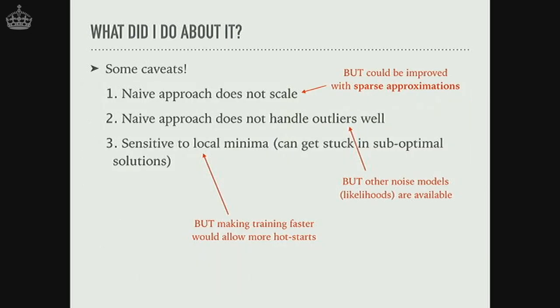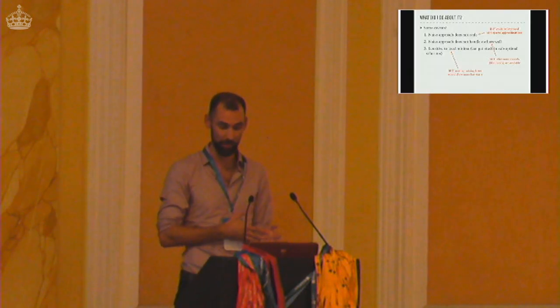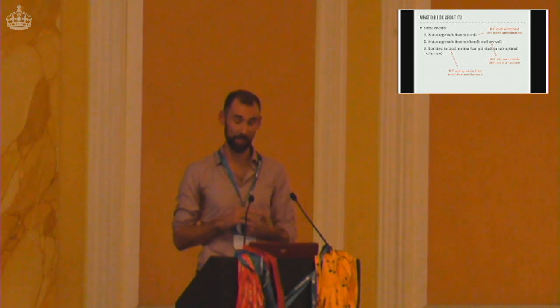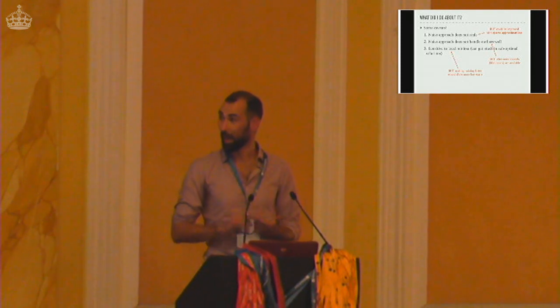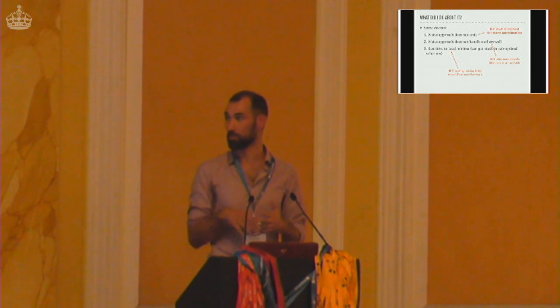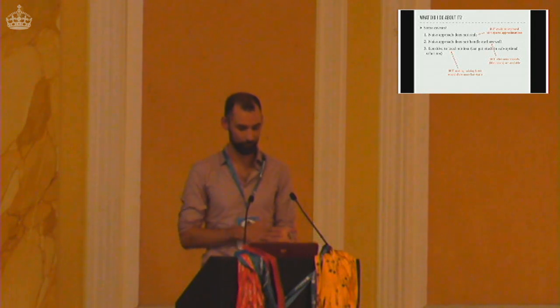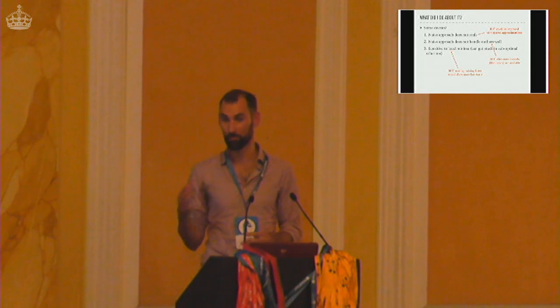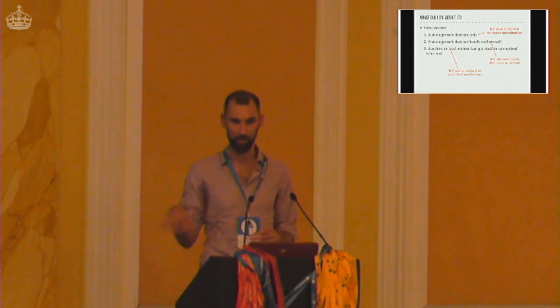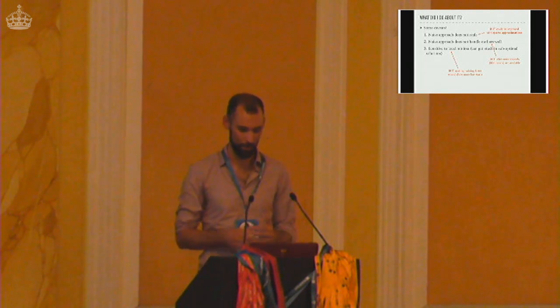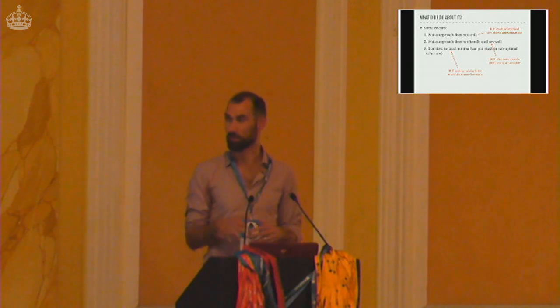A couple of caveats. This naive approach doesn't scale very well — the operations are O(n³) for training where n is the number of data points. We can reduce this to something more sensible using sparse approximations. Secondly, the naive approach doesn't handle outliers very well, though there are other noise models we can use to encode outliers. It's also quite sensitive to local minima, as with any non-linear optimization, but if we make training quicker we can hot-start from more locations and reduce that.